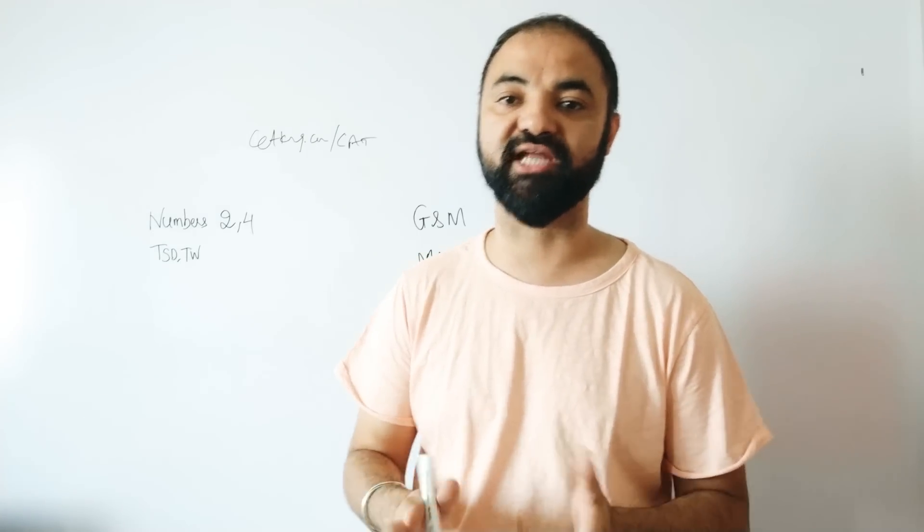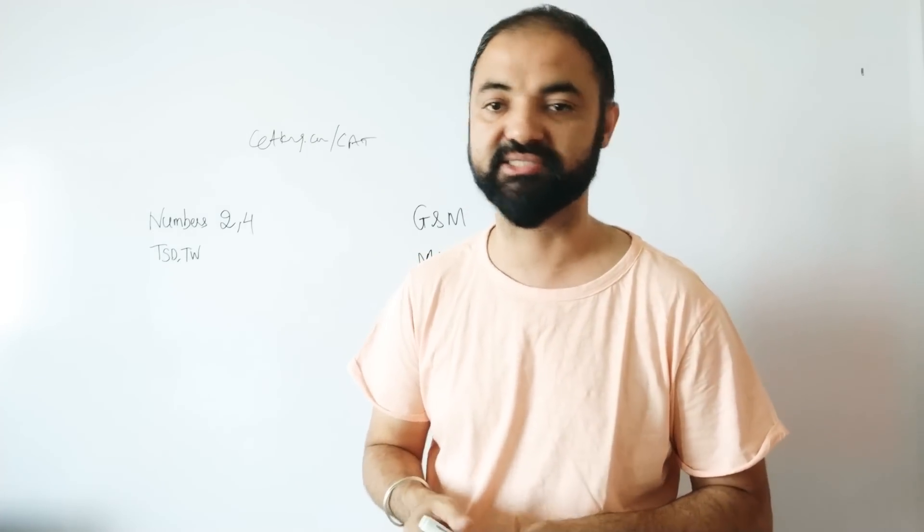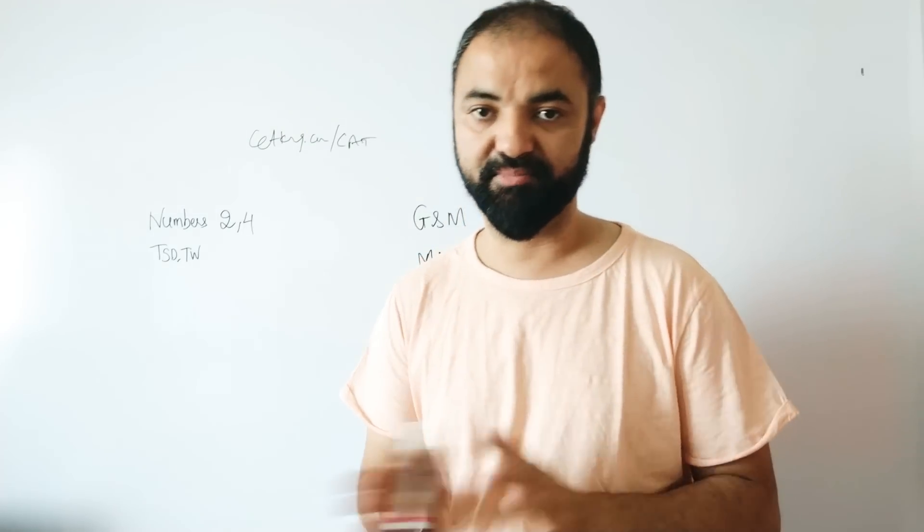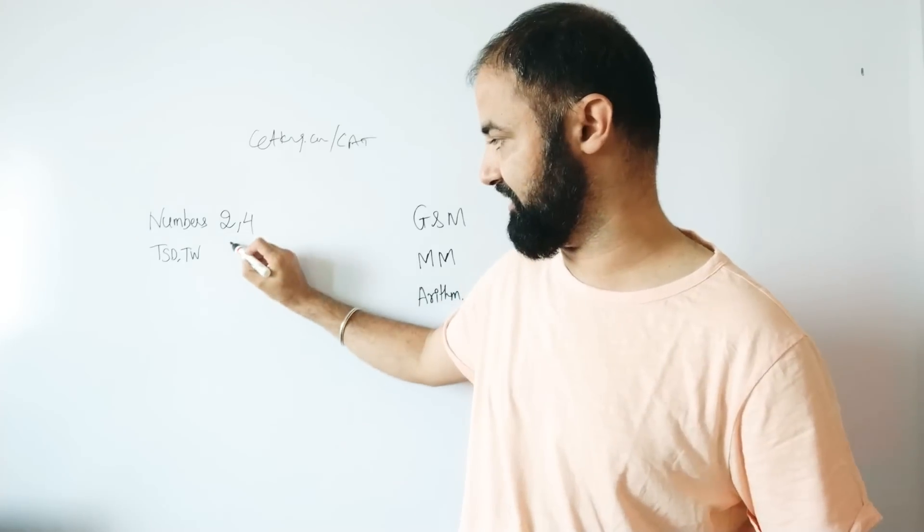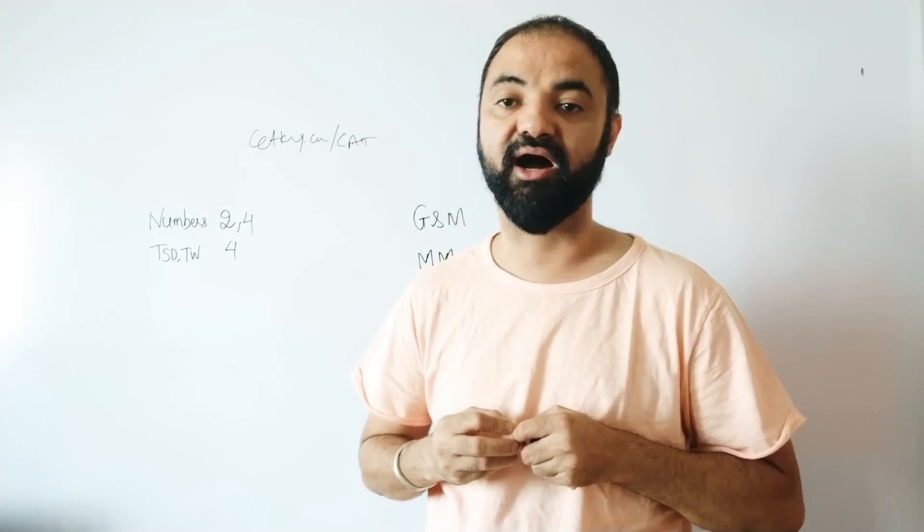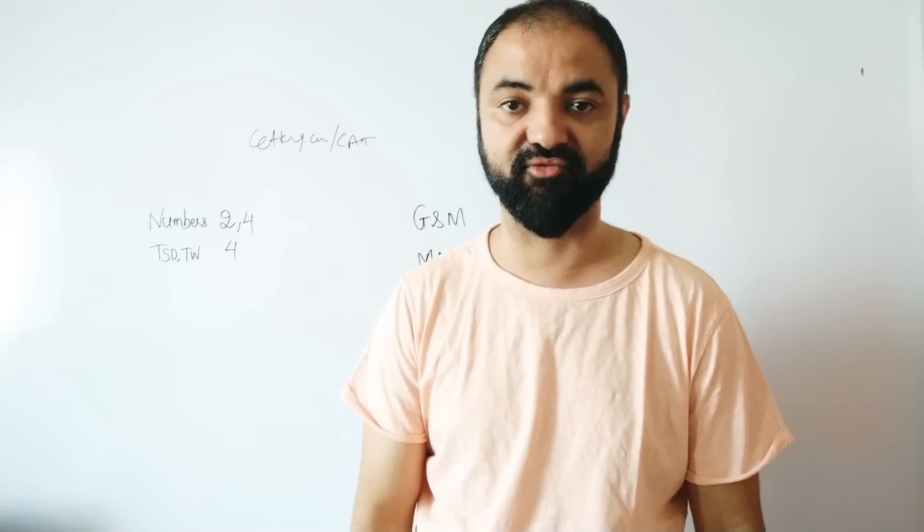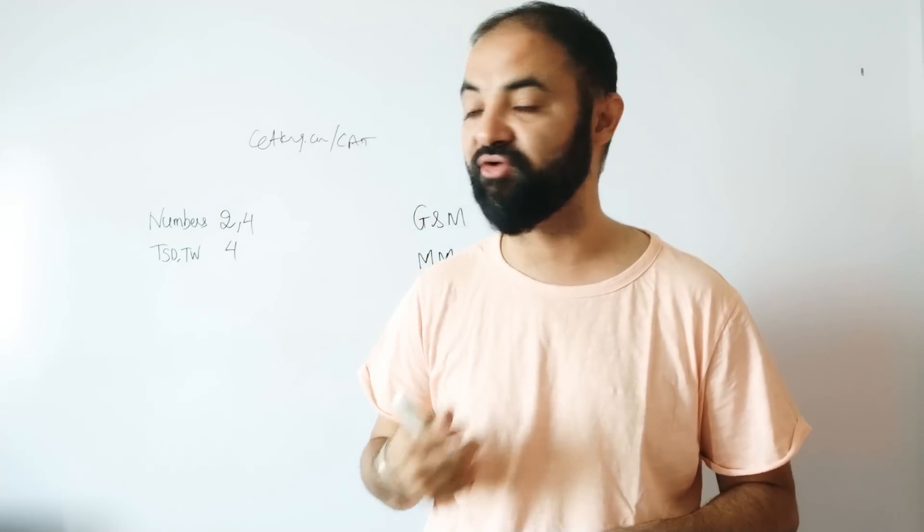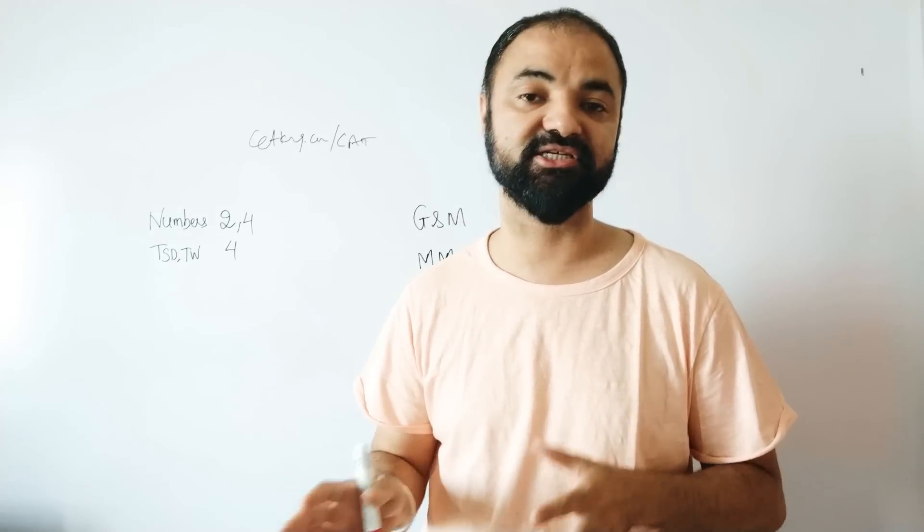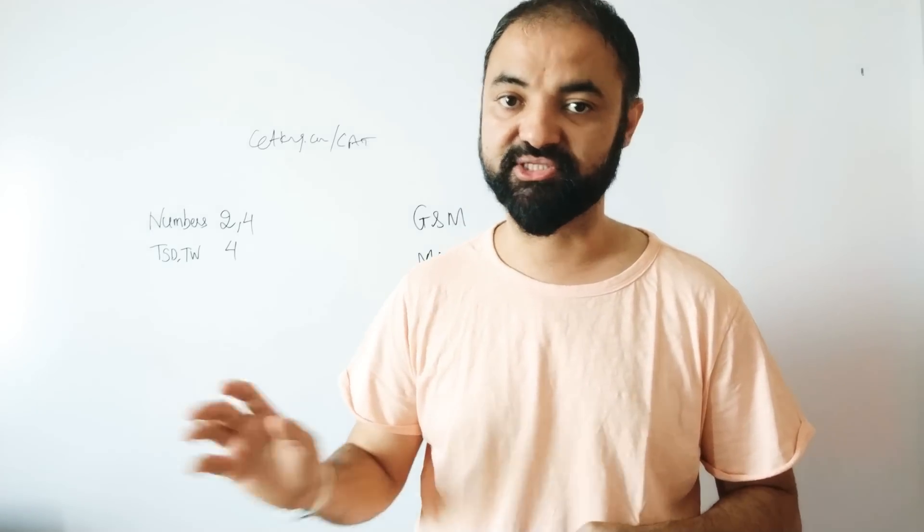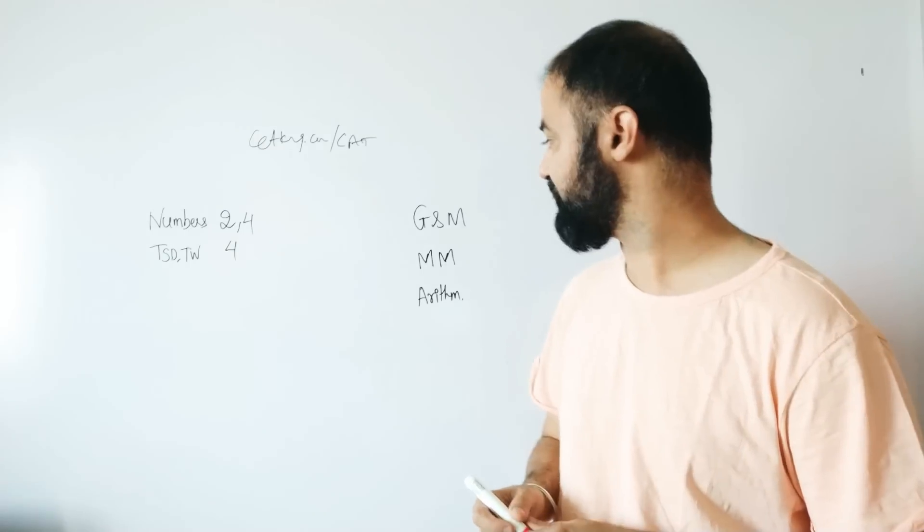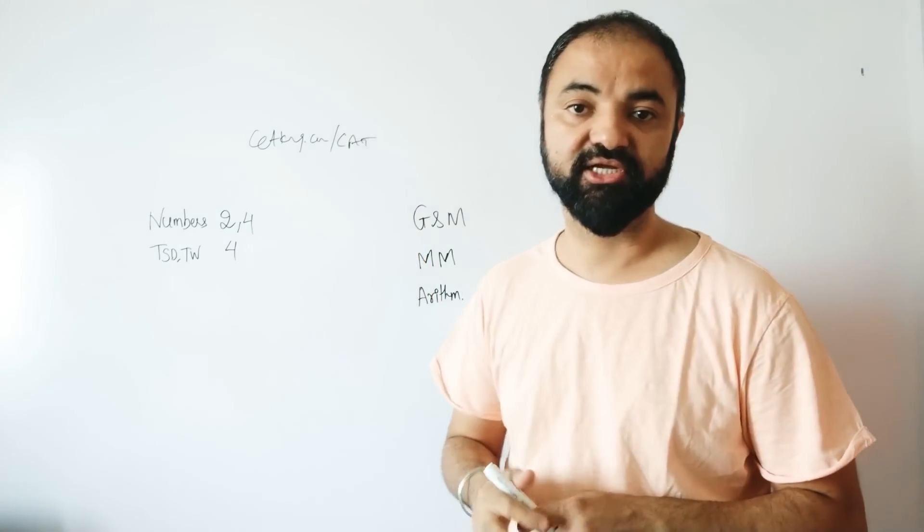Every year, an average of two to four questions are from numbers. Going to the next topic: time, speed, distance, and time & work. It's actually part of arithmetic, but I count them separately because every year four questions in the CAT paper are from these topics. These are very important - in fact, for every exam like CAT, SNAP, and XAT, you'll find time, speed, distance, and time & work. That's something you need to cover early in your preparation.